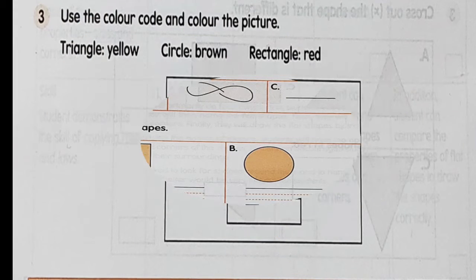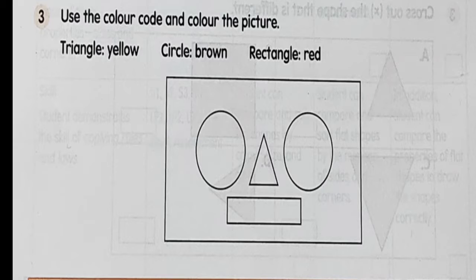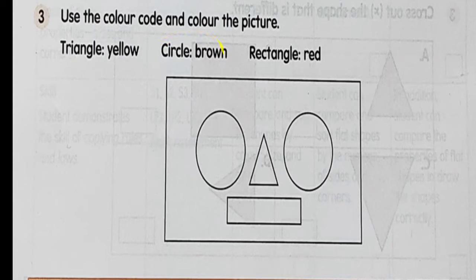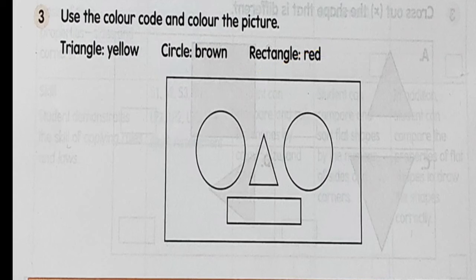As for question 3, it says use the colour code and colour the picture. Look at this carefully. Triangle — yellow. So that means you colour yellow only for a triangle, not the circle, not the square, not the rectangle. Here it says circle — brown. So look at the circle shape and colour it in brown. And rectangle — red. So look at the rectangle in this box and colour it in red. Triangle yellow, circle brown, rectangle red. Please try this on your own. All the best and I'll see you in the next class. Thank you.